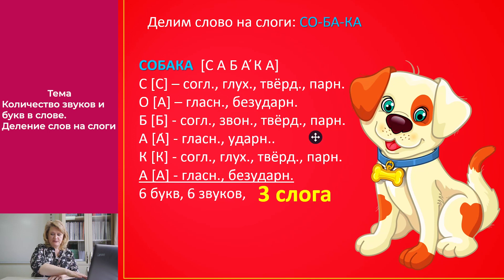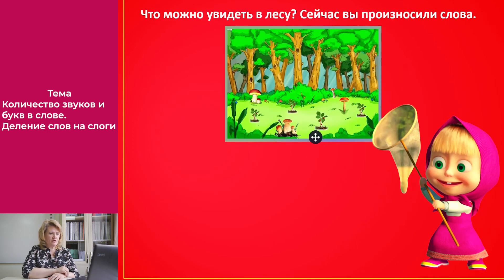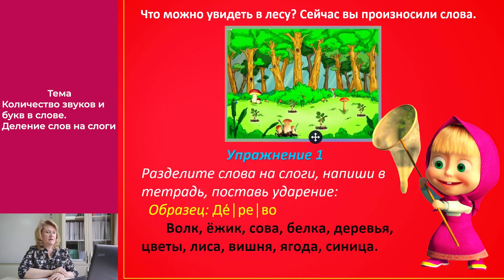Теперь самостоятельно разделите слова на слоги. Что можно увидеть в лесу? Выполним упражнение номер один. Разделите слова на слоги, напишите в тетрадь и поставьте ударение. Обратите внимание на образец: слово «дерево» имеет три слога, ударный первый слог. Слова: «волк», «ежик», «сова», «белка», «деревья», «цветы», «леса», «вишня», «ягода», «синица». Запишите в тетрадь и разделите их на слоги. Не забудьте поставить ударение.